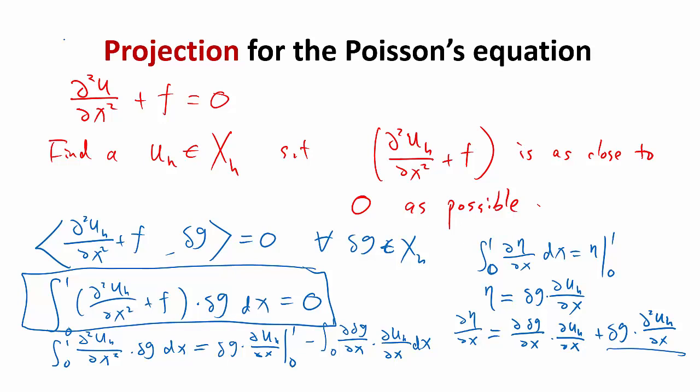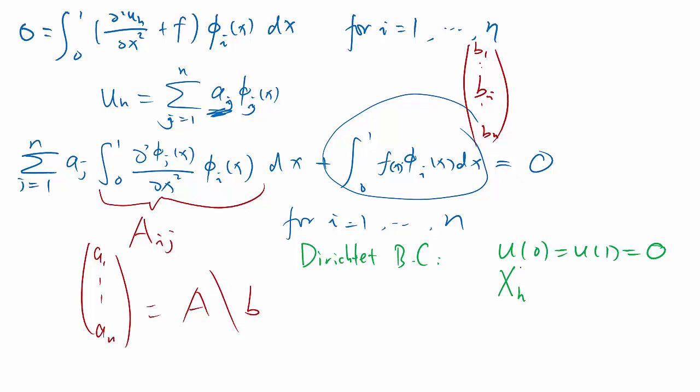So we basically get x_h^0 - let me denote it that way - is the subspace of x_h that actually satisfies the boundary condition.